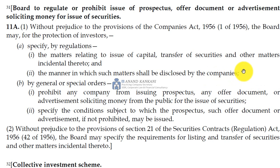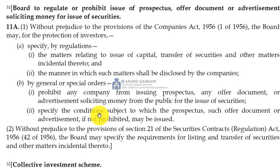SEBI ICDR regulations come from here, because SEBI has been given the power that it can govern the issue of capital, issue of securities. Then, the manner in which matters are to be disclosed by the companies — so ICDR regulations, when you take the draft red herring prospectus, the contents of that are given by SEBI. And by general or special order, SEBI can prohibit any company from issuing prospectus or any document or advertisements soliciting money from the public for the issue of securities. If you remember the Sahara case, SEBI said Sahara could not issue any convertible debentures.